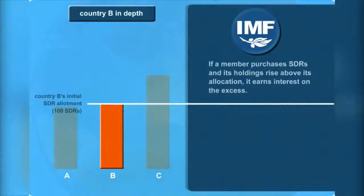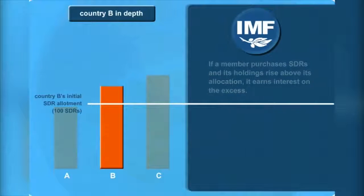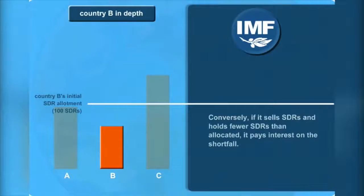If a member purchases SDRs and its holdings rise above its allocation, it earns interest on the excess. Conversely, if it sells SDRs and holds fewer SDRs than allocated, it pays interest on the shortfall.